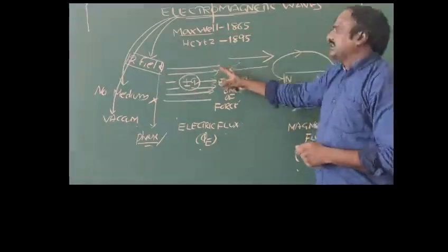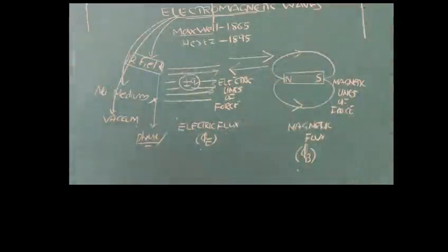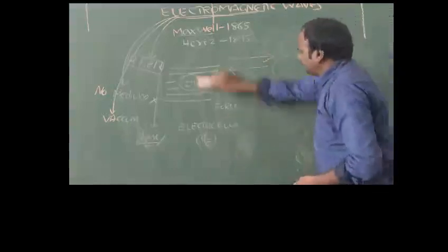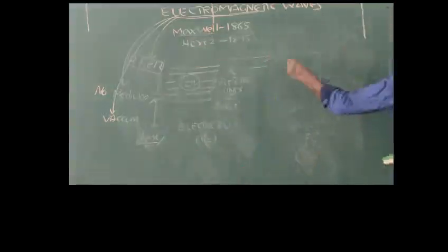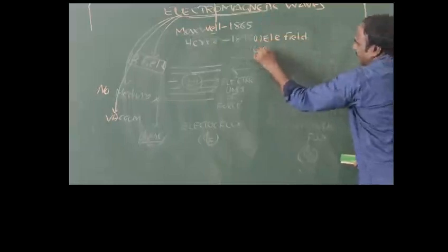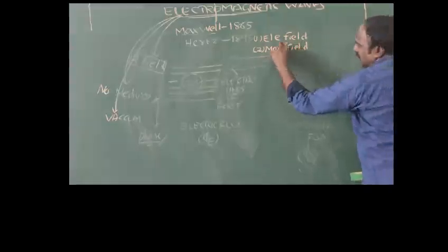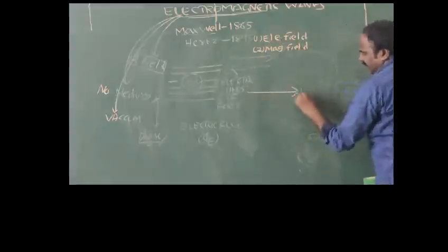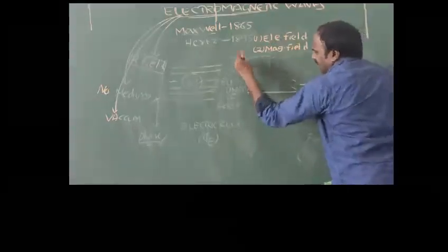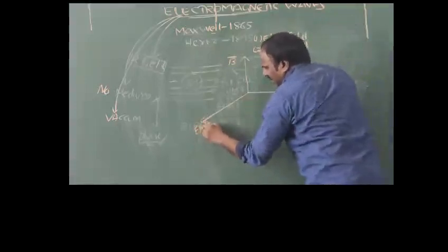The important points related to electromagnetic waves: they require two fields — the electric field and the magnetic field. These two fields are always perpendicular to each other. If the electric field acts along the x-axis and the magnetic field acts along the y-axis, then the electromagnetic wave will be moving along the z-axis.